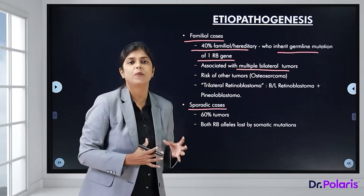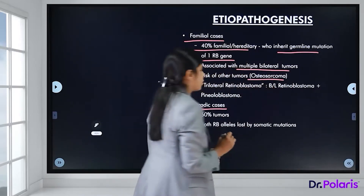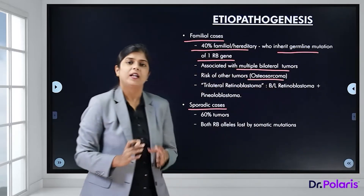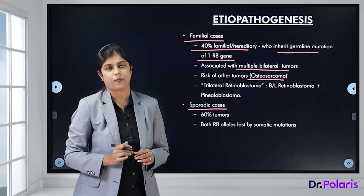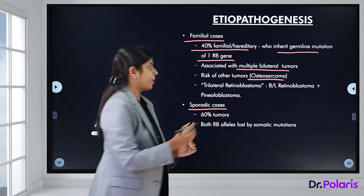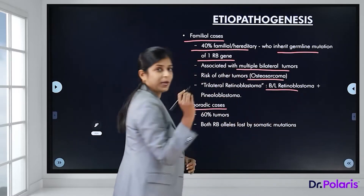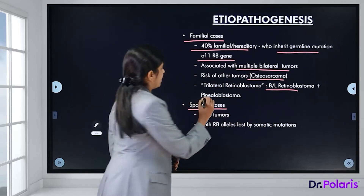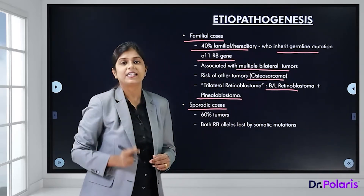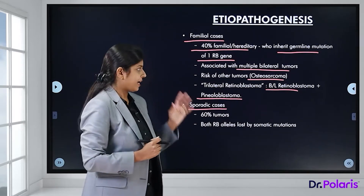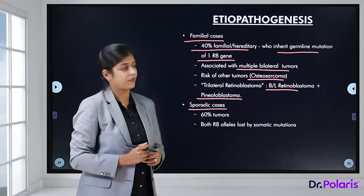The commonest associated tumour is osteosarcoma. Trilateral retinoblastoma refers to bilateral retinoblastoma plus another tumour — pinealoblastoma — arising in the pineal gland.